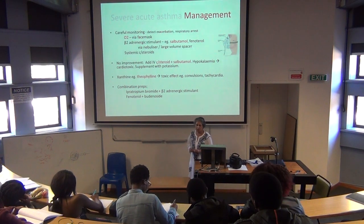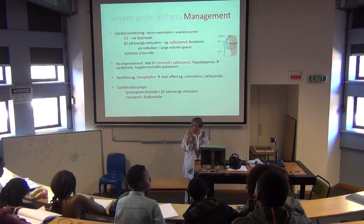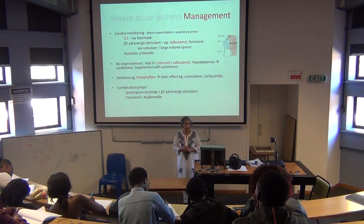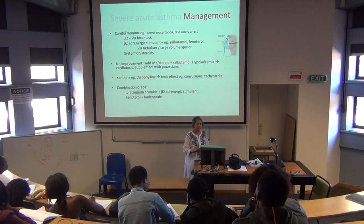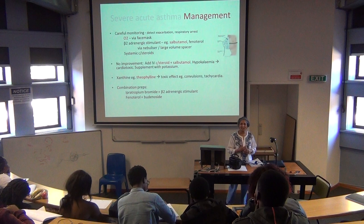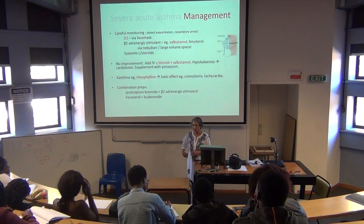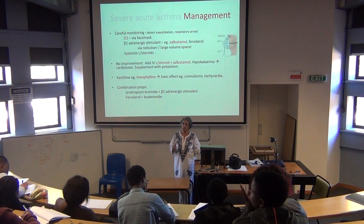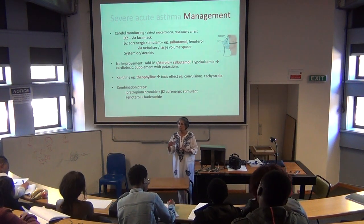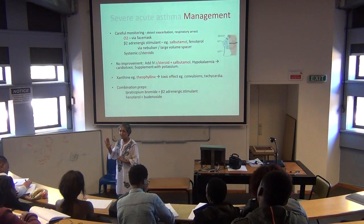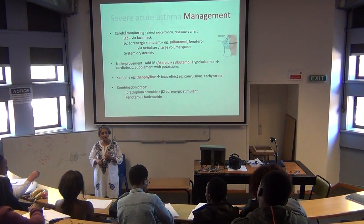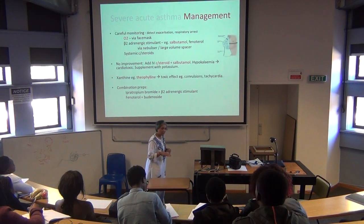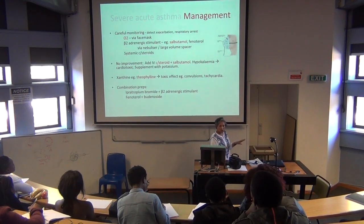How do we manage a patient with severe acute asthma? First, oxygen via face mask. Then a beta-2 stimulant via a nebulizer. Then corticosteroids via IV injection. If you have both salbutamol and a steroid being administered, we must monitor potassium levels, because the side effects of both corticosteroids and salbutamol include lowering of potassium. So we need to give potassium supplements to maintain stability.